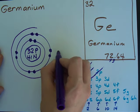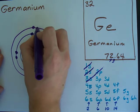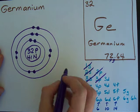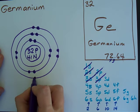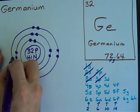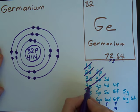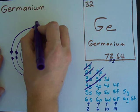I need another line here. 1, 2. Now I need to add another 6 to my third. 1, 2, 3, 4, 5, 6. And I need to add my next 2 to the fourth shell.